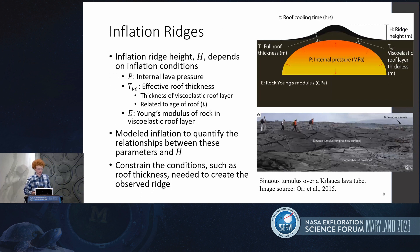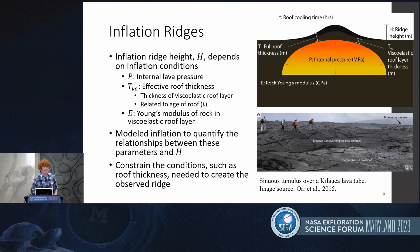The second method I've been using is looking at inflation ridges. I've been modeling inflation of tubes to find what combination of parameters can produce an observed ridge height. The ridge height h depends on the internal lava pressure p, the effective roof thickness — which is the thickness of a viscoelastic layer in the roof when the tube is active, expected to contribute most of the roof's strength — and the Young's modulus of the rock. I've modeled the inflation of these tubes to quantify how these parameters depend on each other, and to constrain unknowns by using constraints on the known ones.